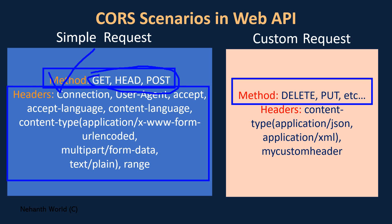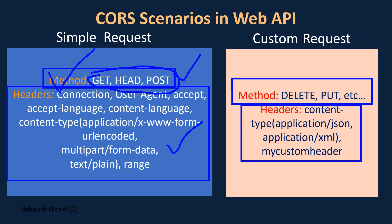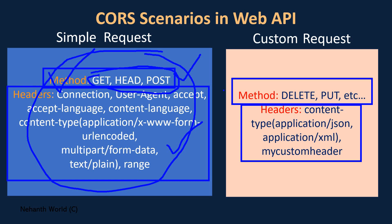These are the other types apart from the simple request. For headers also, you can see custom headers. So any request having a method type and headers from the simple list will be a simple request, and anything outside that list will be considered a custom request.